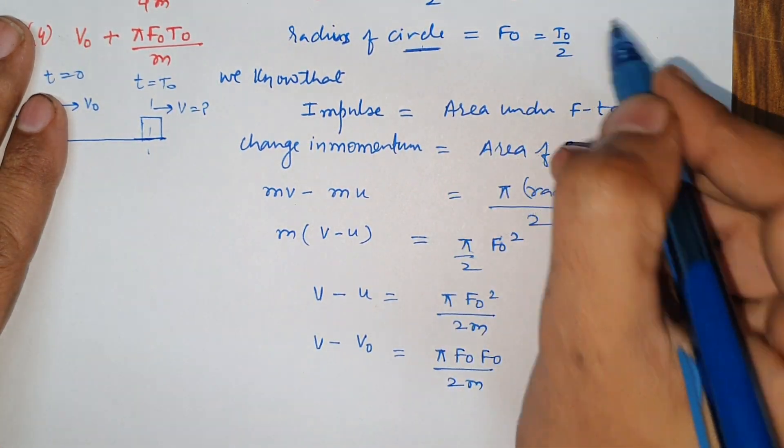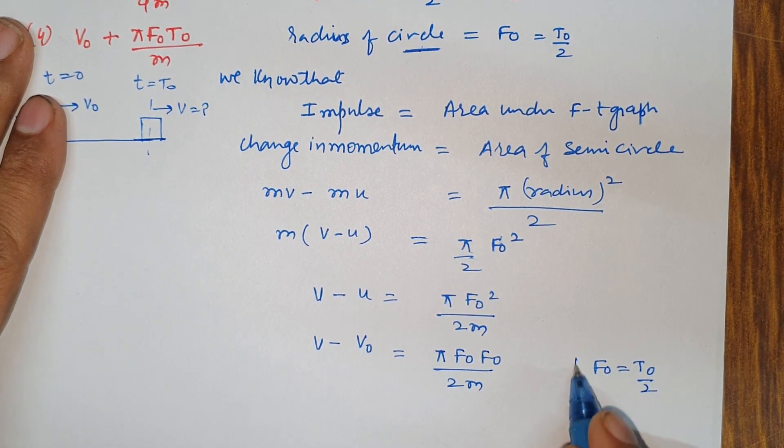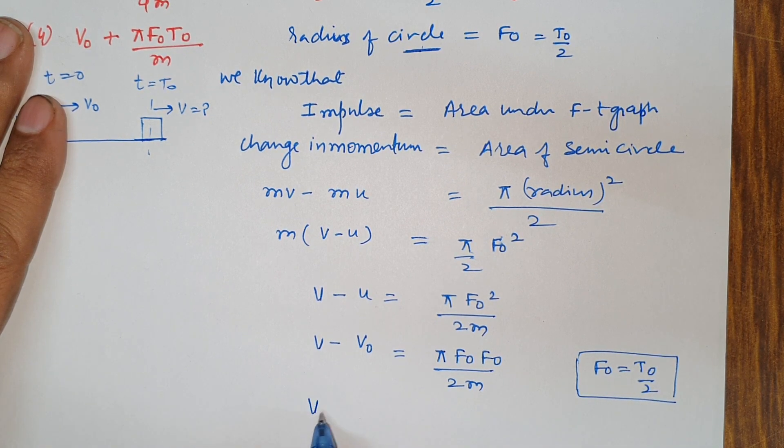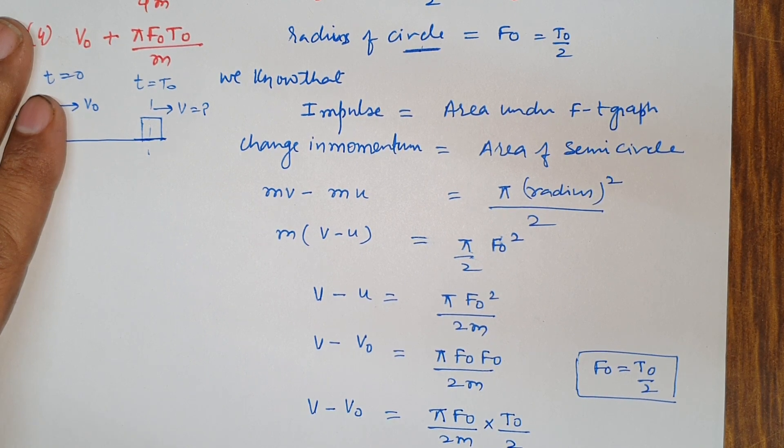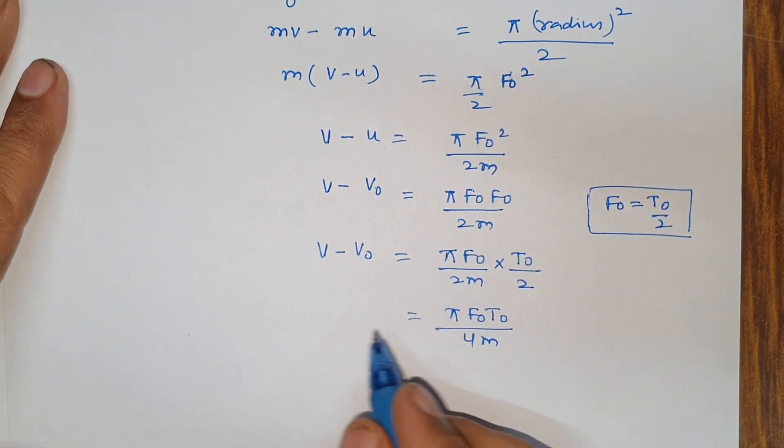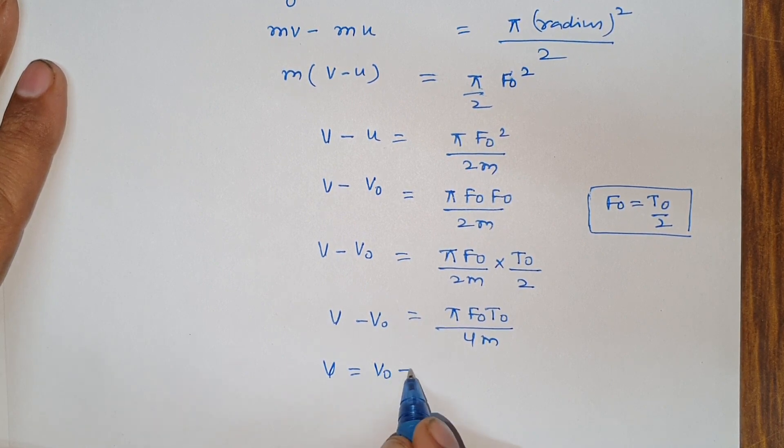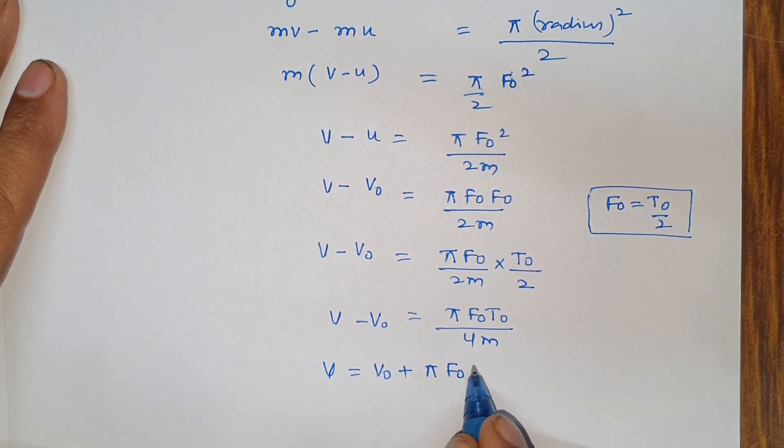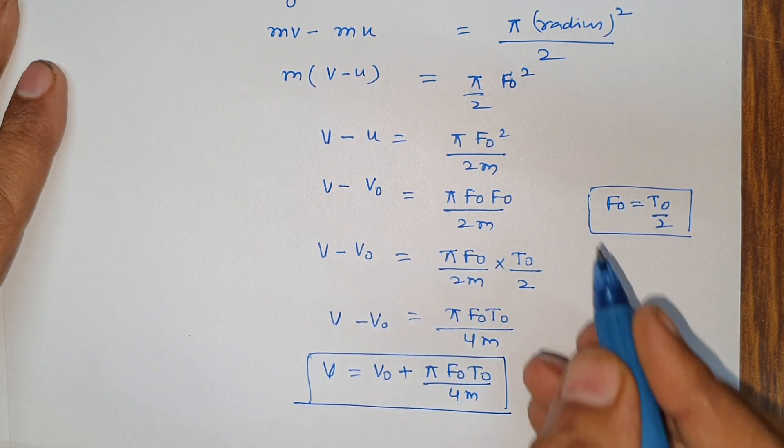f0 is given t0 by 2. v minus v0 is given pi f0 by 2m multiplied by t0 by 2, pi f0 t0 divided by 4m. v minus v0, v is equal to v0 plus pi f0 t0 divided by 4m.